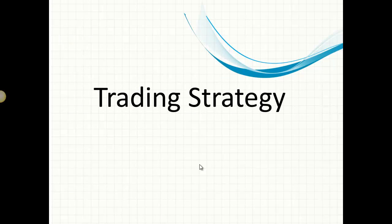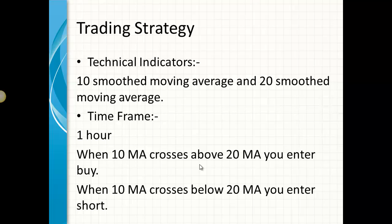Here's the trading strategy. The basic requirement is the MetaTrader 4 platform with two technical indicators: the 10 and 20 smoothed moving averages — not regular moving averages, but smoothed. The time frame is the 1-hour chart. I suggest this strategy only for the crude oil market. When the 10 moving average crosses above the 20 moving average, you enter a buy trade — no questions asked. When the 10 moving average crosses below the 20 moving average, you enter a short sell trade. Simple as that.